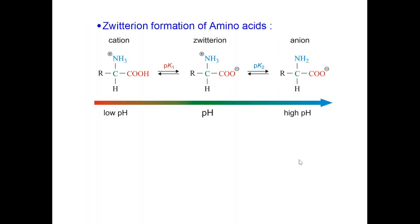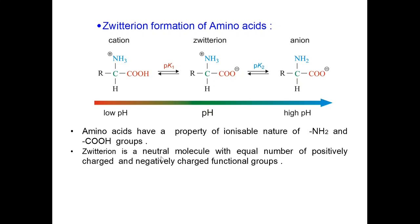Now, zwitterion formation of amino acids. Look at the picture here. In the middle, there is zwitterion showing neutrality. Amino acids have a property of ionizable nature of amino and carboxyl groups, which means it can gain or lose electrons. Zwitterion is a neutral molecule with equal number of positively charged and negatively charged functional groups. This is showing neutral molecule here.